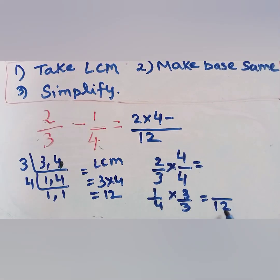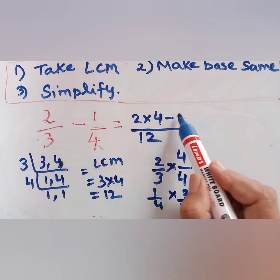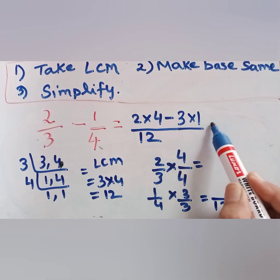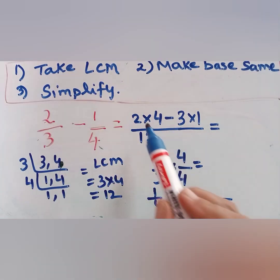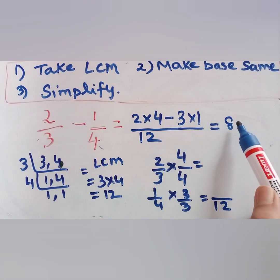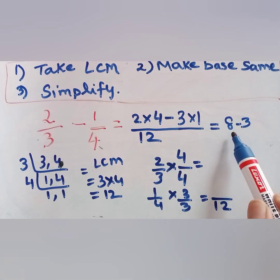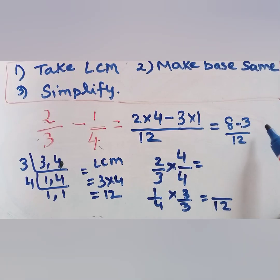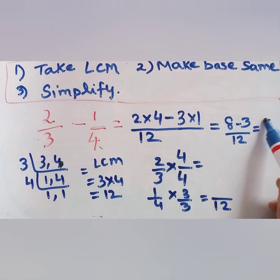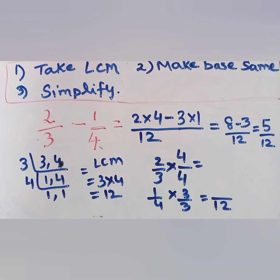The base has become 12 and we write 3 × 1. Now we simplify — the third step: 2 × 4 is 8 minus 3 × 1 is 3, divided by 12. So 8 minus 3 is 5, and the answer is 5 by 12.